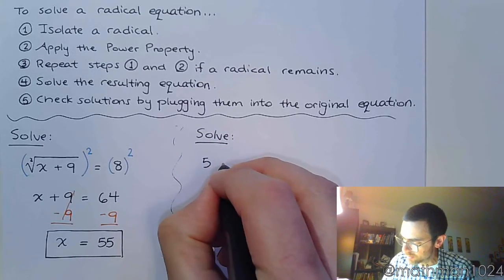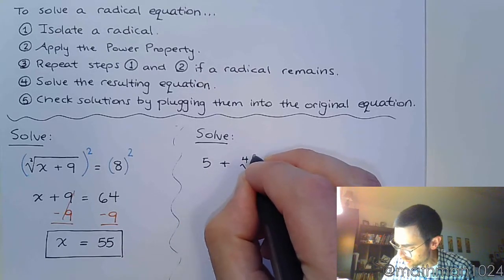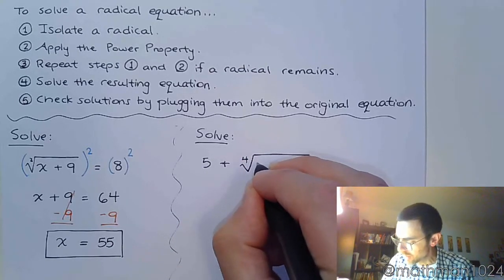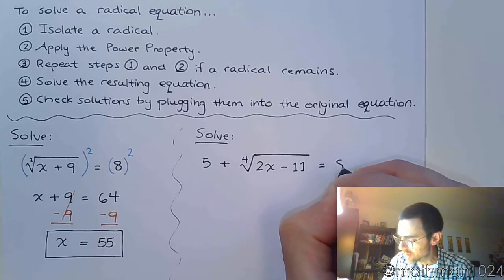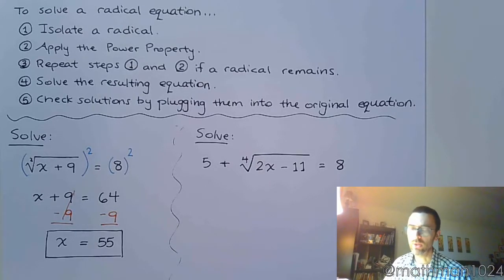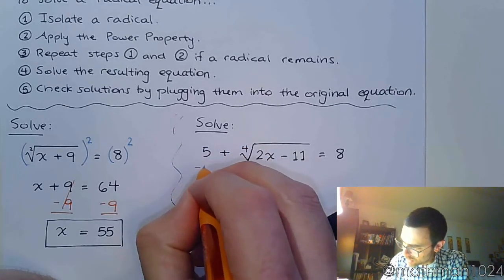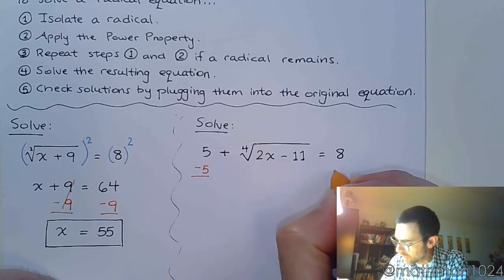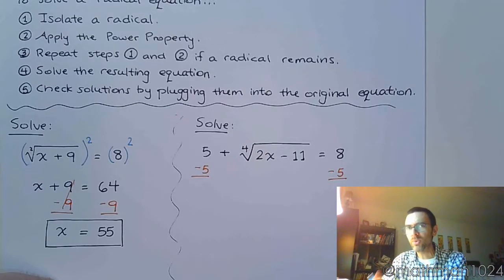All right, let's try another one. Let's look at 5 + ∜(2x - 11) = 8. First things first is we need to isolate a radical. So this is the only radical we have, so to get this guy by itself we need to subtract the 5 and move it to the other side. Please understand that the 5 is not connected to the radical - you've got the plus there which creates that bit of separation.